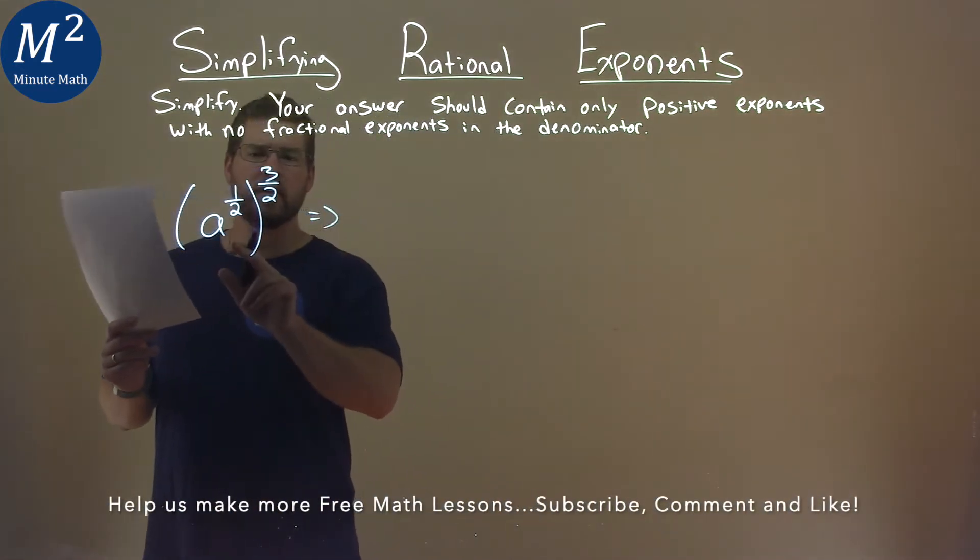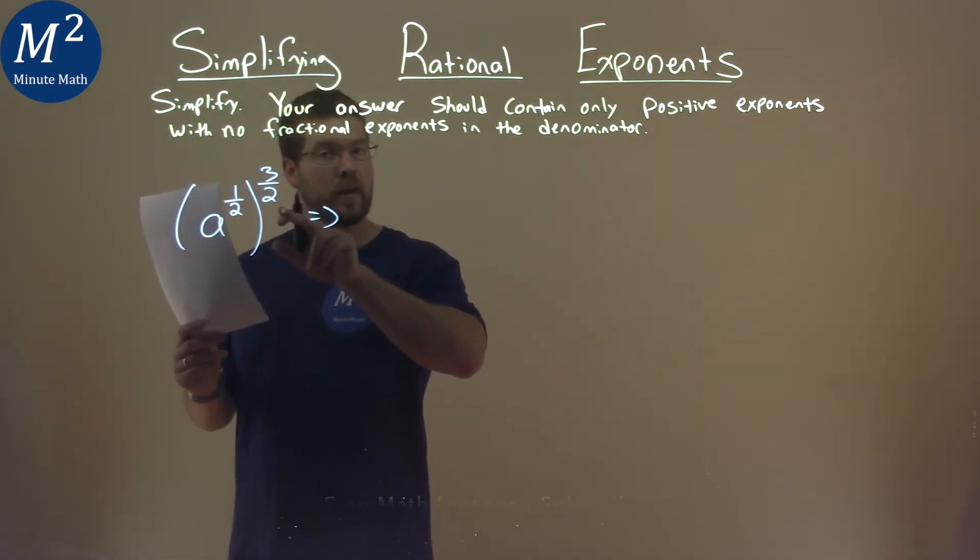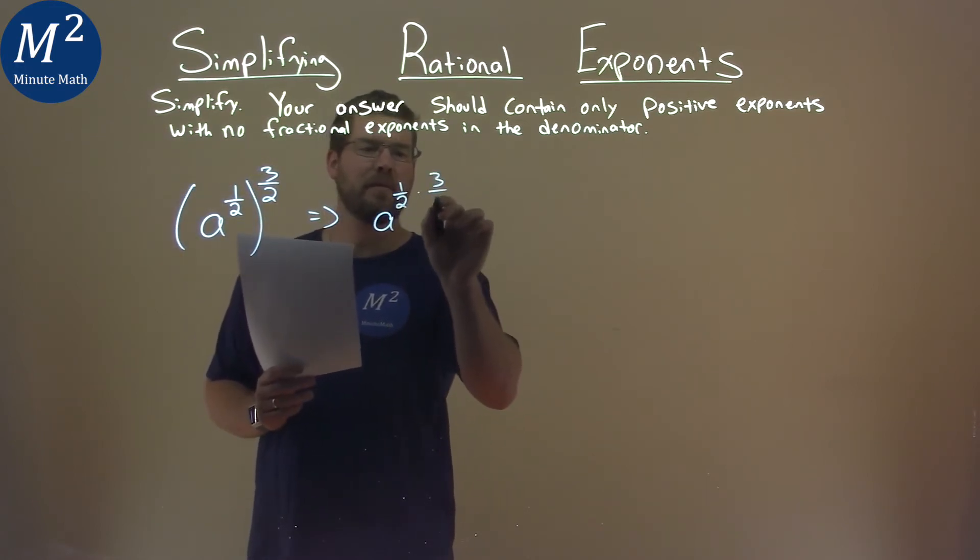Well, our rules here with exponents, when we raise something to another exponent, exponent to another exponent, we multiply them. So we have a to the one-half here times three-halves.